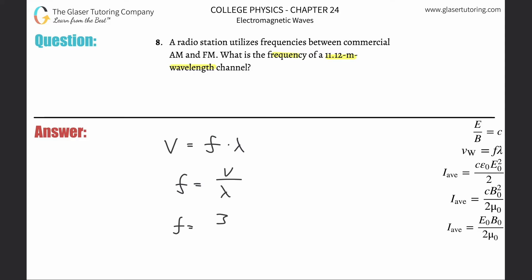So all we need to simply do is plug in that constant of the speed of light, then divide it by the wavelength, which is 11.12 meters. It's already in the right unit, so you don't have to worry about that. So we can just say 3 times 10 to the 8 divided by 11.12.